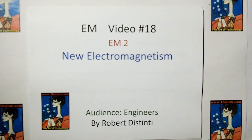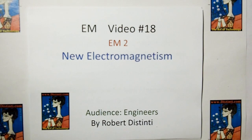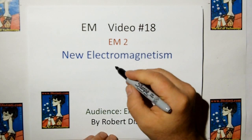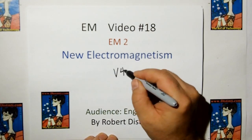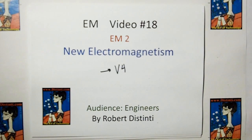Welcome to Ethereal Mechanics, video number 18. This is the second video in the electromagnetism series. We skipped the first one, which was just an experiment on Faraday's Law. Here we're going to discuss new electromagnetism up to version 4. As you may recall from previous videos, version 5 is what's going to be released in Ethereal Mechanics.